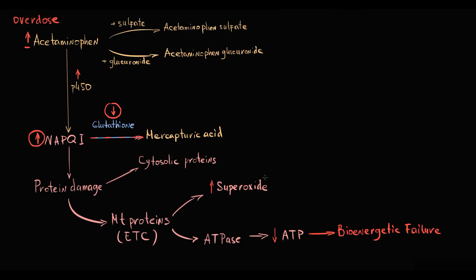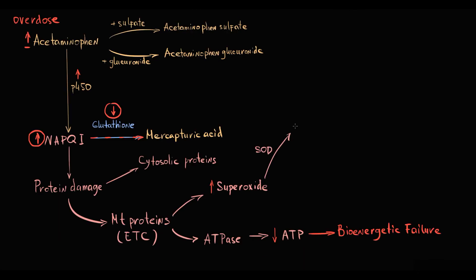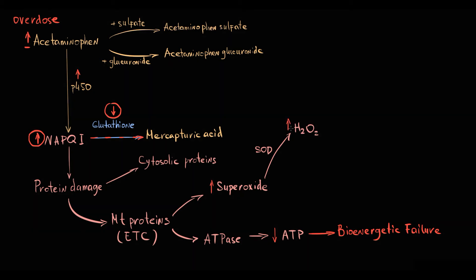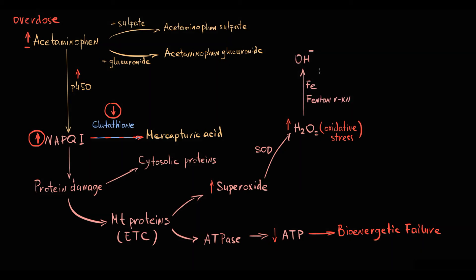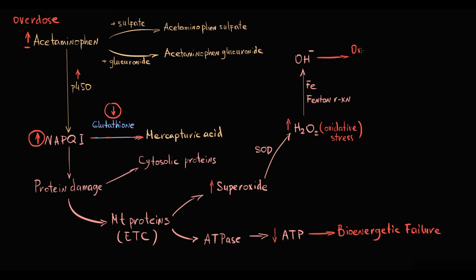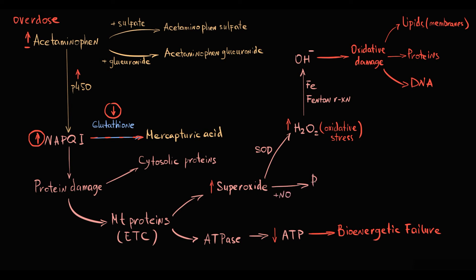Superoxide is immediately converted by superoxide dismutase to hydrogen peroxide, and excessive accumulation of hydrogen peroxide constitutes oxidative stress. Hydrogen peroxide can be further oxidized by iron in the Fenton reaction, forming hydroxyl radical — a highly reactive substance that causes oxidative damage to lipids in cell membranes, cellular proteins, and DNA. Additionally, superoxide binds to nitric oxide to form peroxynitrite, a very potent oxidant that induces nitrosative stress.